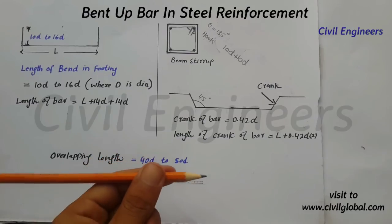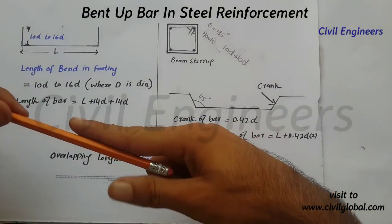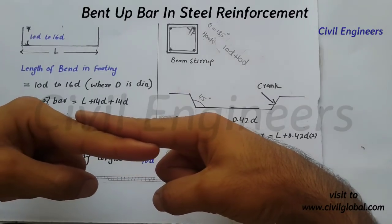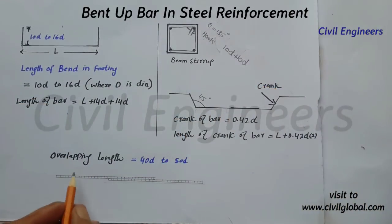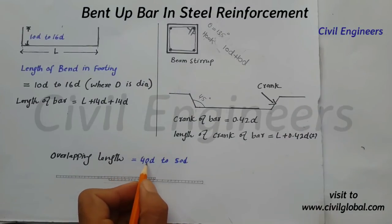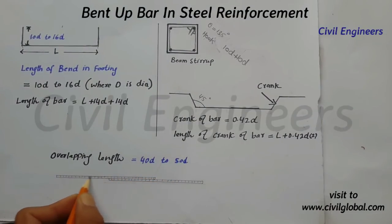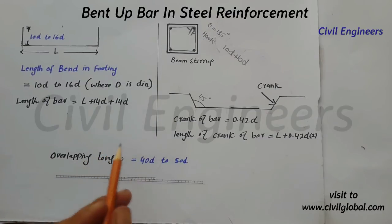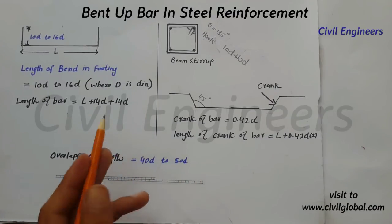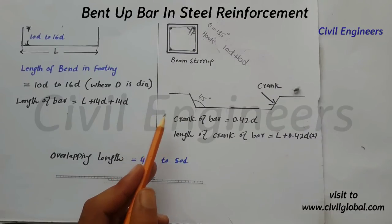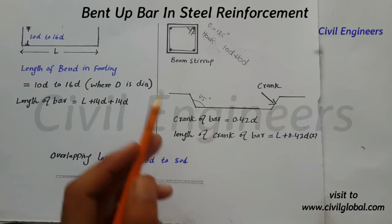The other type is the overlapping length. We overlap one steel on another — same like this — and bind them together. The formula for overlapping length is 40D to 50D, where D is the diameter of the steel. This is the easy way to find out the bend of bar in different steel reinforcement.